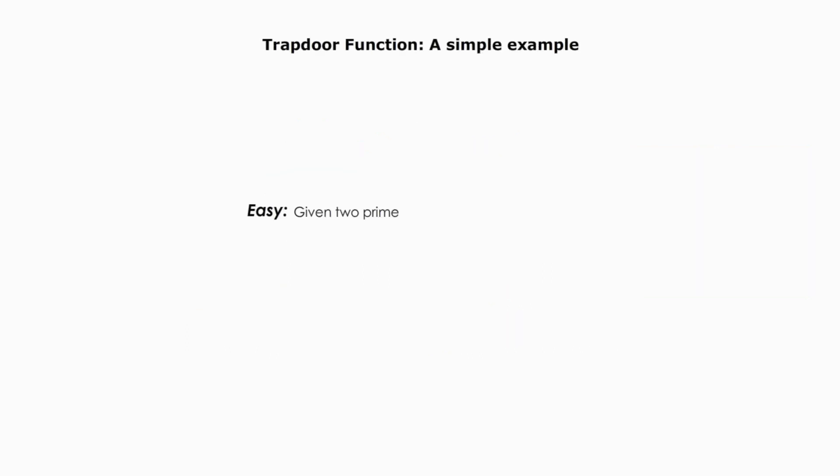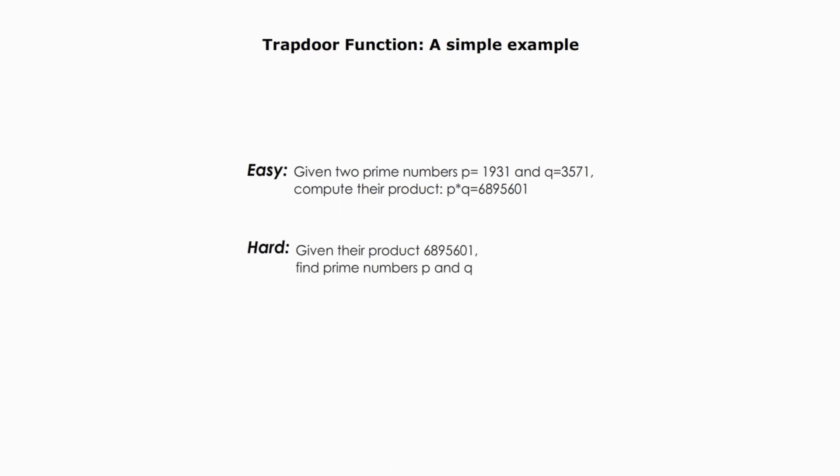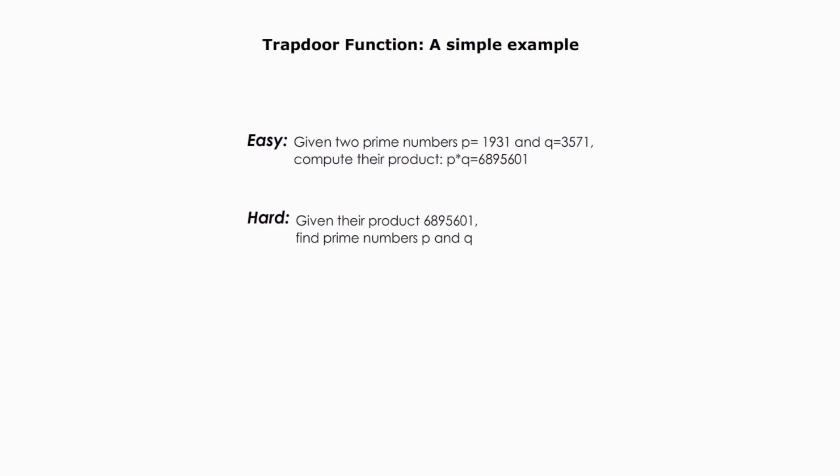Using the same example above, if giving two prime numbers p and q is easy to compute their product, no problem. But giving their product this big number is hard to find prime numbers p and q. That's one-way function. However, if p or q is known, it is also easy to find the other prime number.